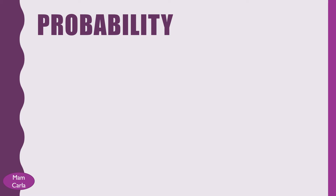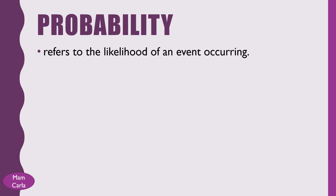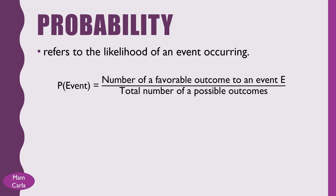Let us begin with the definition of probability. Probability refers to the likelihood of an event occurring. It can be expressed in a variety of ways, including mathematically, formal ways such as using percentages, or using vocabulary such as unlikely, likely, certain, or possible. The probability of an event can be obtained using the number of favorable outcomes over the total number of possible outcomes.